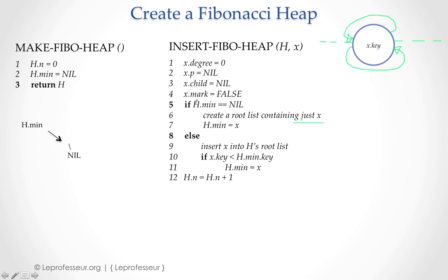If we already have a heap and the min pointer is not nil, it means elements are already in the heap. We insert node x into the root list of the heap. Then, if x.key is less than h.min.key — meaning this new key is less than the current minimum — we make this new node the minimum. If not, we don't touch the original minimum pointer. We then increment the node count by one.